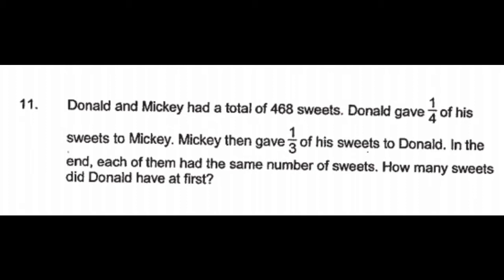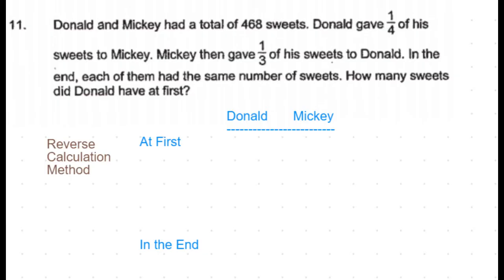Donald and Mickey had a total of 468 sweets. Donald gave one-fourth of his sweets to Mickey. Mickey then gave one-third of his sweets to Donald. In the end, each of them had the same number of sweets. How many sweets did Donald have at first? We are going to solve this using the reverse calculation method.